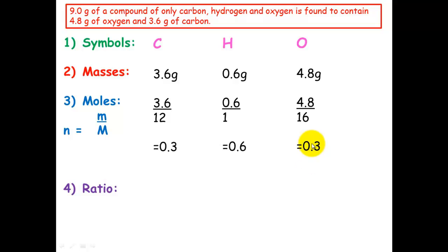So for carbon, we will get 0.3 divided by 0.3, which is 1. Hydrogen, 0.6 divided by 0.3, which is 2. And oxygen, we'll also get 1. So there are our ratios. Carbon, 1. Hydrogen, 2. Oxygen, 1.